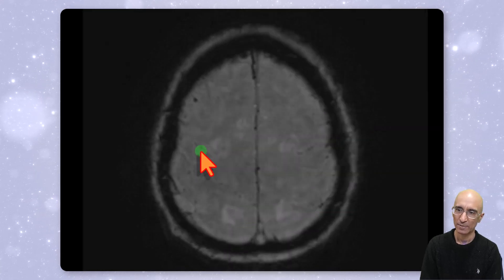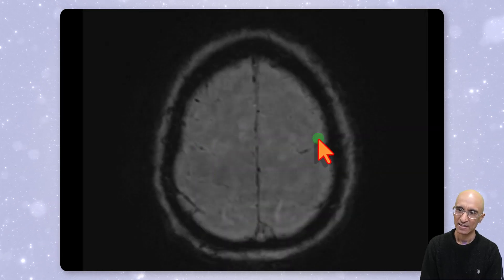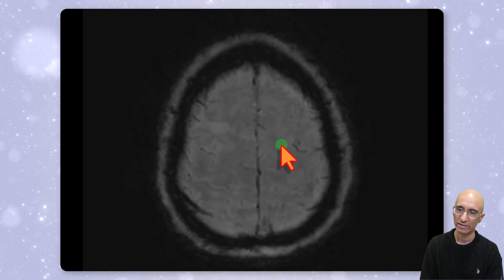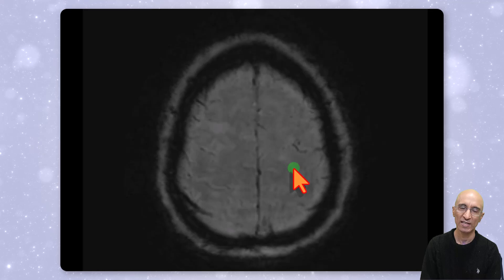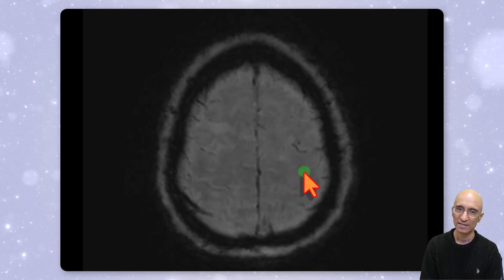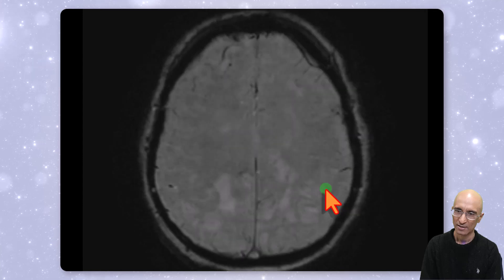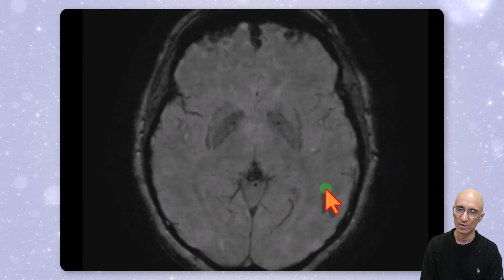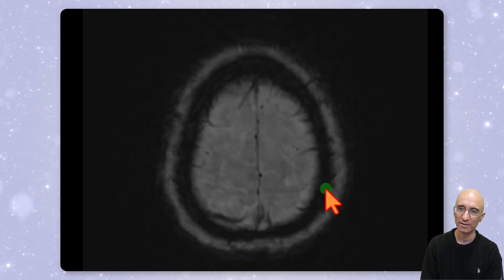On the axial SWI images, we can see subtle susceptibility in the left frontal region, which corresponds to the hyperdensity we saw on the CT head examination, consistent with sulcal subarachnoid hemorrhage. As I scroll through the SWI images, there is no other focus of acute hemorrhage seen in the brain.